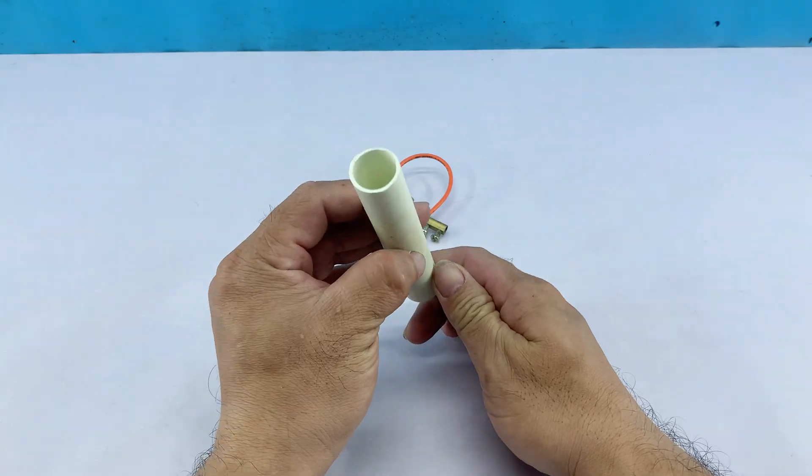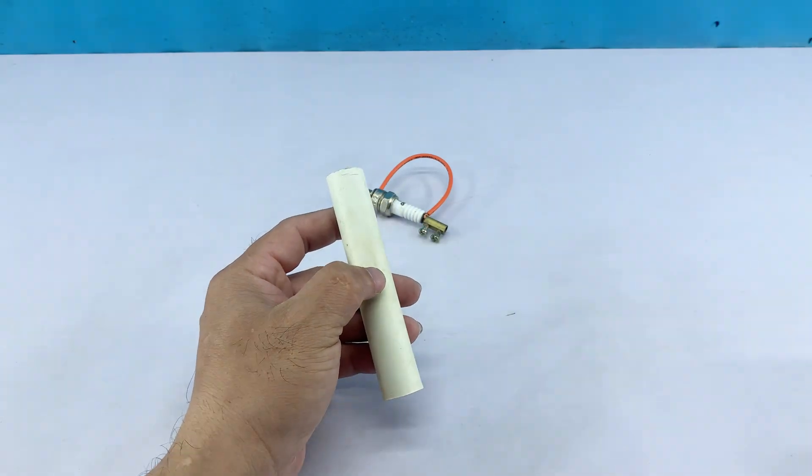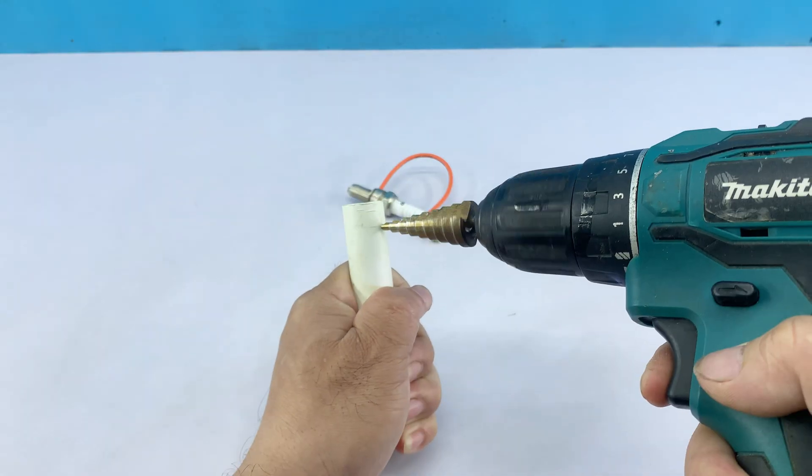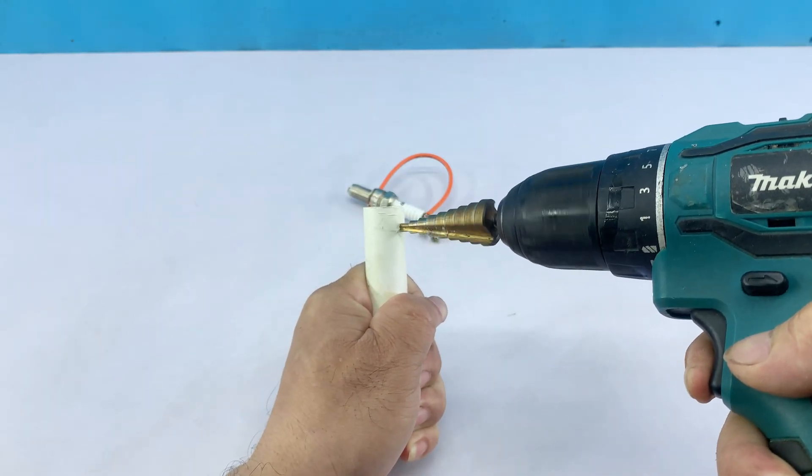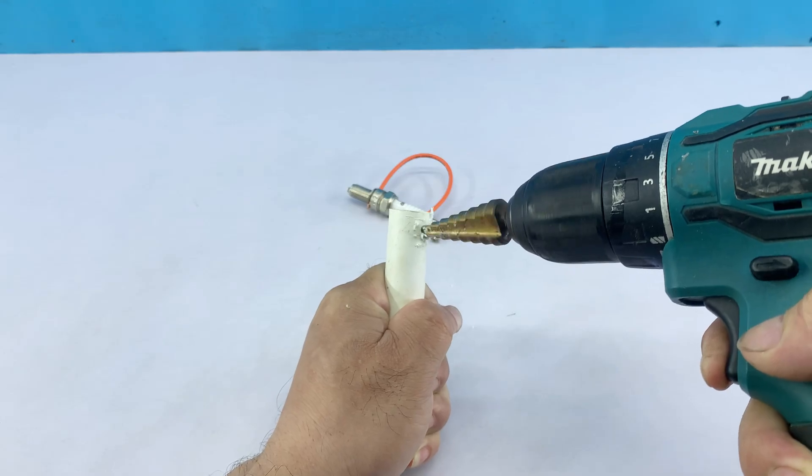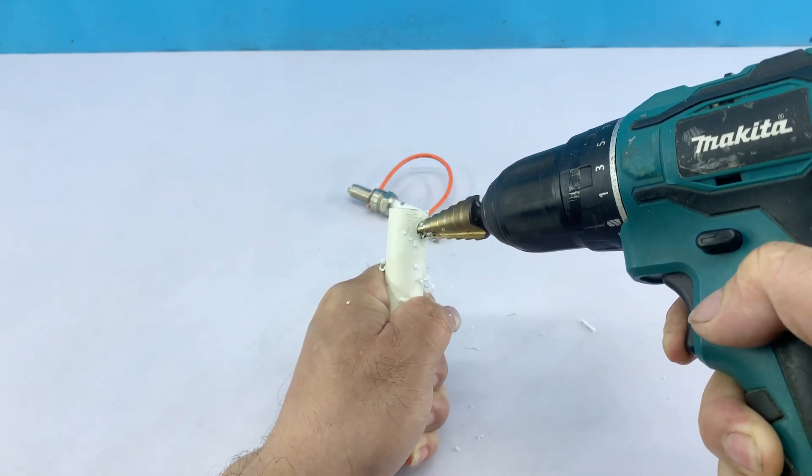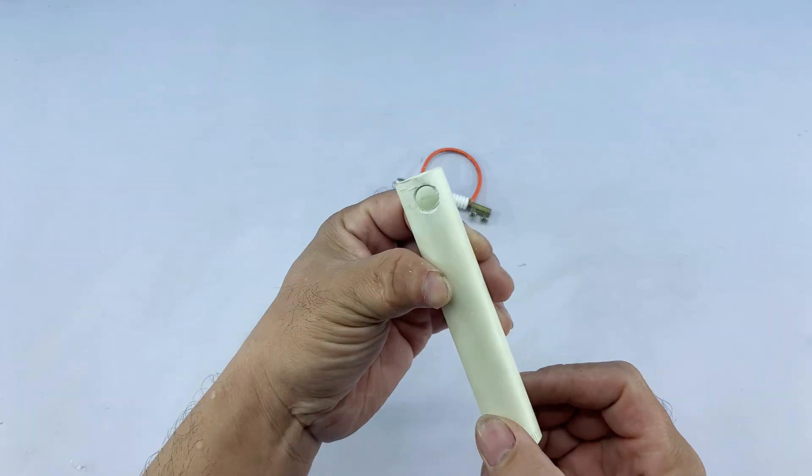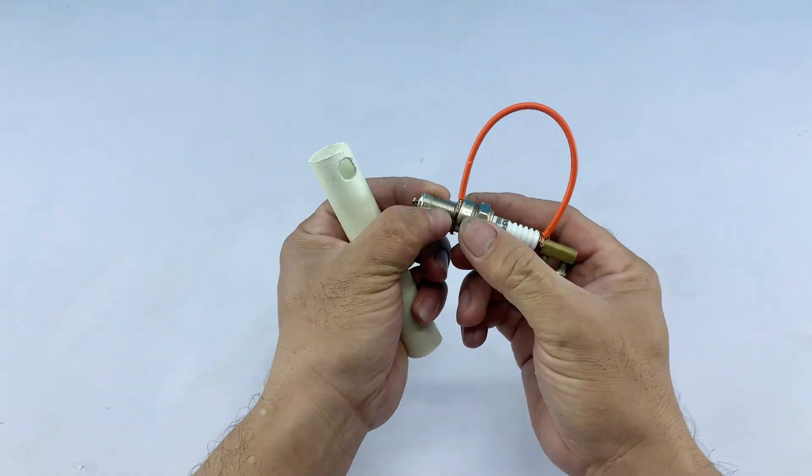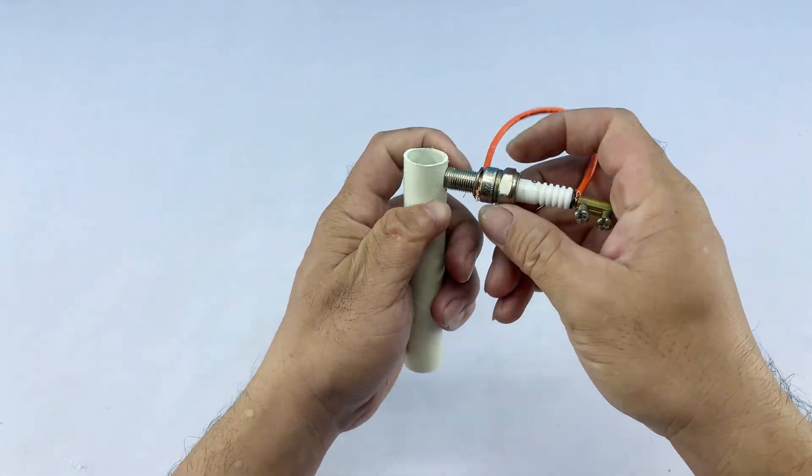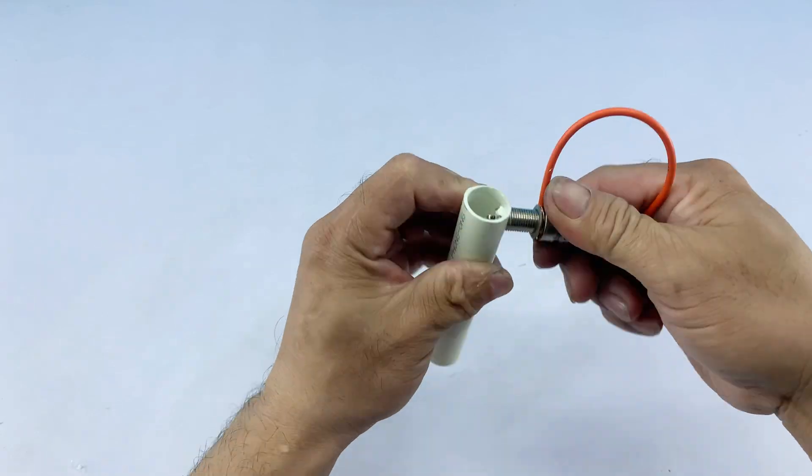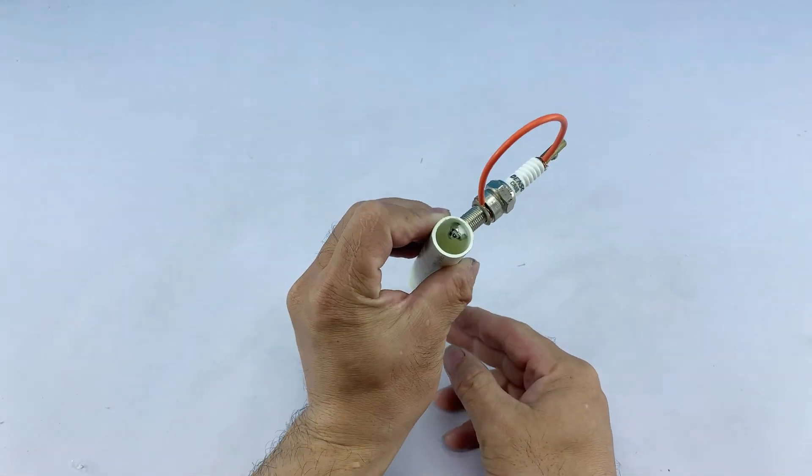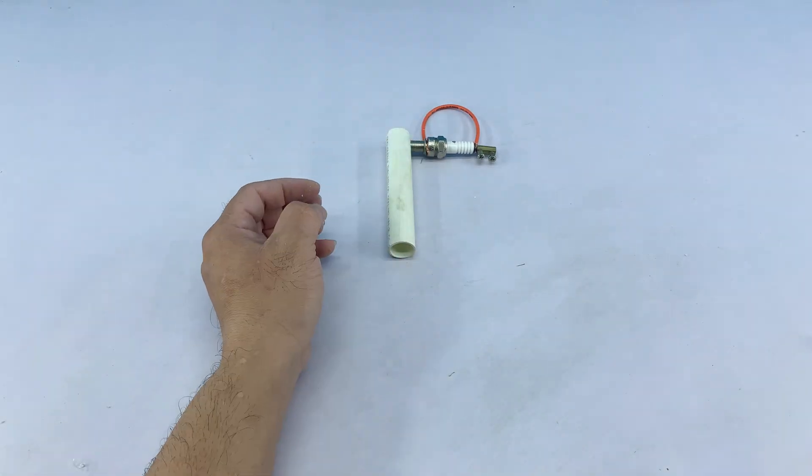To create a comfortable handle, I'm taking a small section of PVC pipe. I'll drill a hole through it, large enough for the spark plug to fit snugly. This will provide insulation and a grip for using the soldering iron. The spark plug assembly is then inserted into the pipe. Now the spark plug with its wire assembly fits perfectly into the PVC pipe, creating a comfortable and insulated handle.